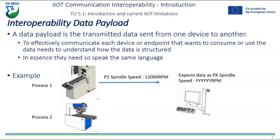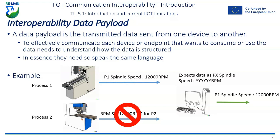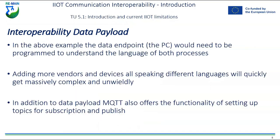Process 1 sends its data as 'P1 spindle: 12,000 RPM', which is exactly the format expected at the endpoint, so it can be displayed on screen or forwarded on. But if Process 2 has its own implementation that doesn't adhere to what's expected, you won't be able to communicate — even small differences cause problems. If you have 100 processes all doing their own thing, programming the endpoint to understand every language gets very complicated very fast.